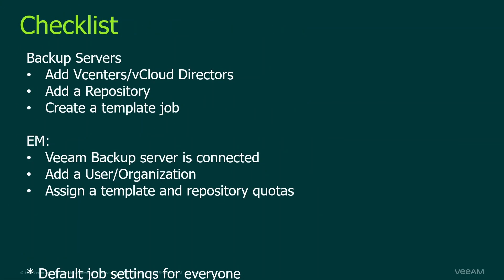Before we jump to the demo, let's go through a short checklist of what we need to have prepared before configuring the self-service backup portal. On the backup server side, we need to make sure we have a connected vCenter or vCloud Director visible in our backup infrastructure. We also need an added repository that will be used by our tenant to store backups. Finally, we need a template job, which we configure and assign to one of our tenants. The settings defined by the service provider in this template job will be used in the jobs created by the tenant. In some cases it makes sense to have multiple templates, or even one template per tenant, since any change in the template job will affect the tenants using it.